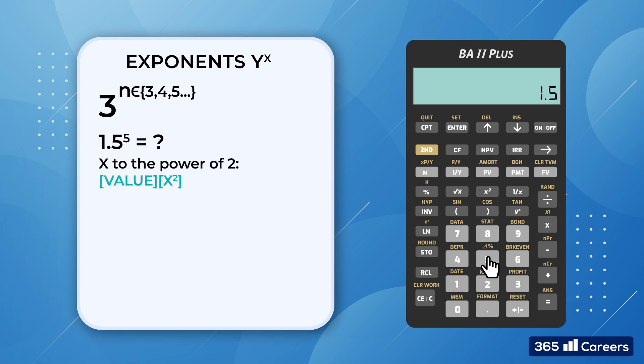X-squared allows us to raise to the second degree. If you press it twice, you can get x to the power of 4. If you press it three times, you can get x to the power of 8, and so on. In our case, things are a bit different, and we'll need to use the y to the x-th degree. Here's how it works. We enter 1.5, hit y to the power of x key, followed by 5. The result is 7.59. Great!